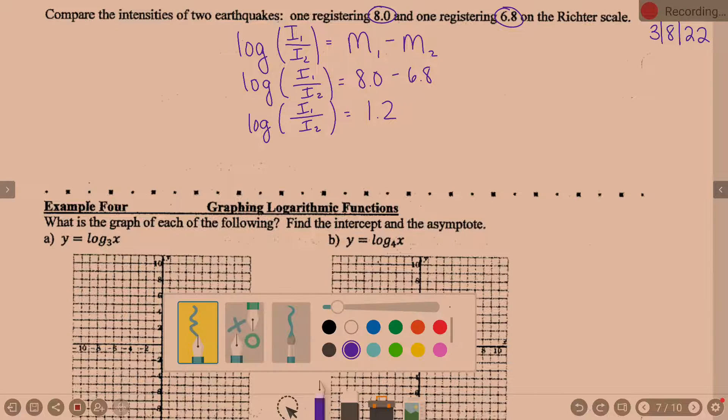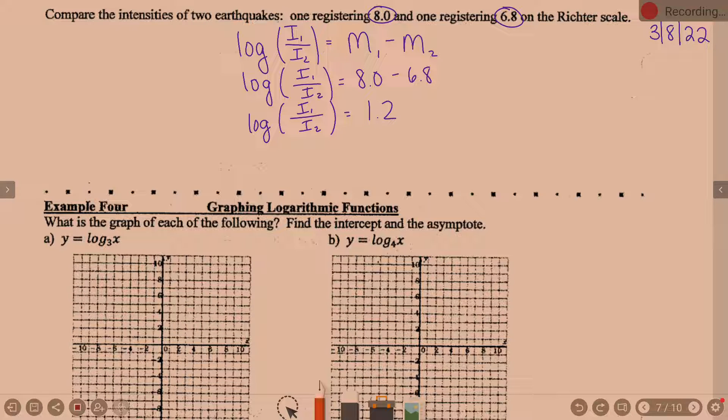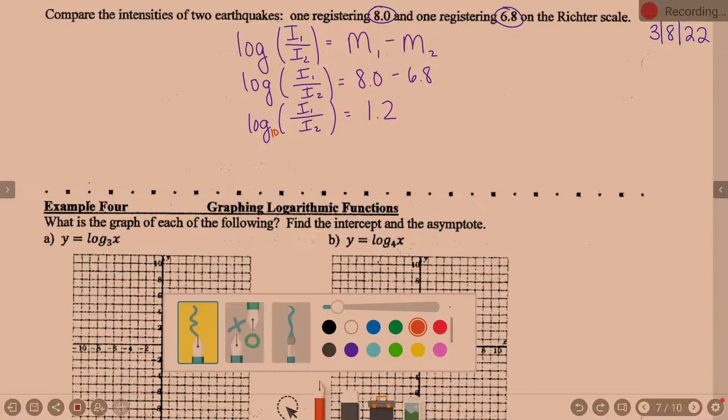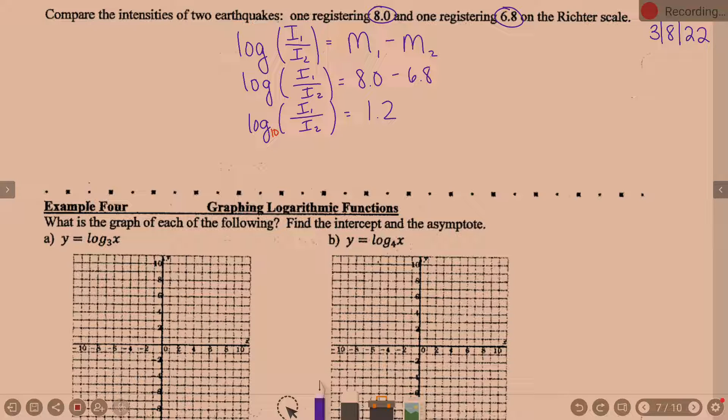Remember, if there's no base written on the log, what is the automatic base if nothing's here? That is a 10. The invisible 10. How do we get out of log form? What was our phrase yesterday? Left, right, middle. The 10 on the left is raised to the 1.2 on the right, and it equals the middle value, which in this case is the first intensity divided by the second intensity.